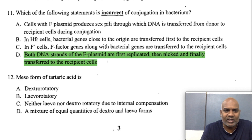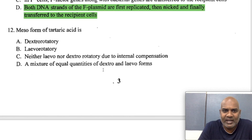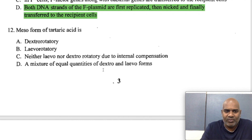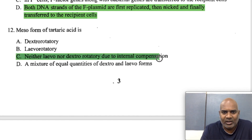What is the meso form of tartaric acid? The meso form of tartaric acid is neither dextrorotatory nor levorotatory — it has internal compensation, so it is optically inactive.